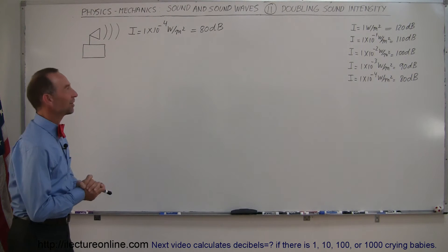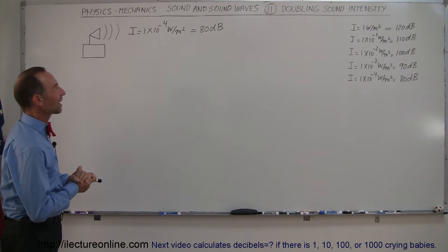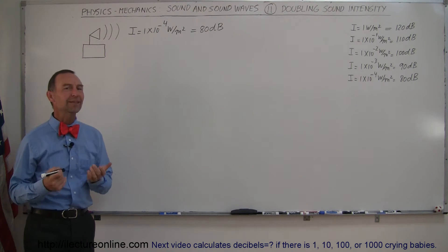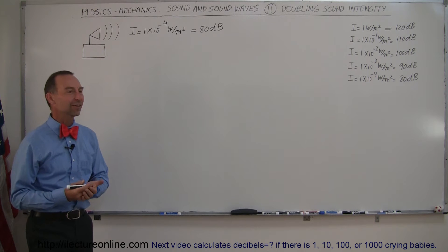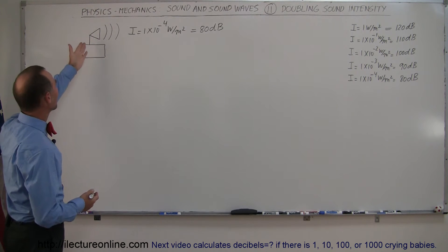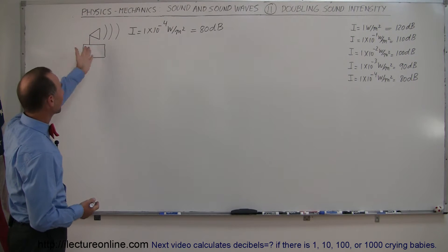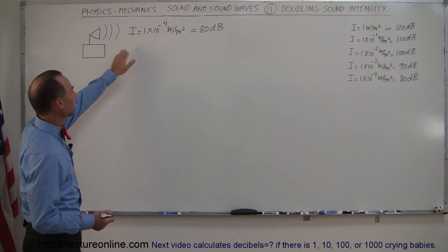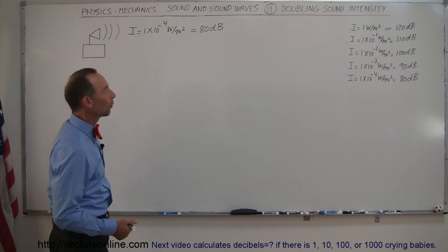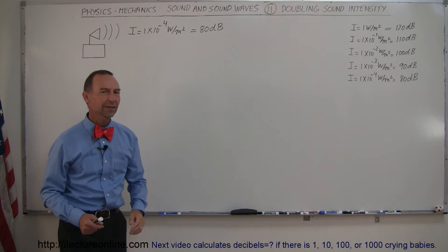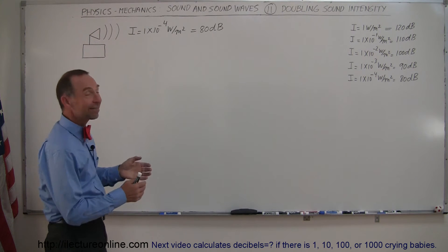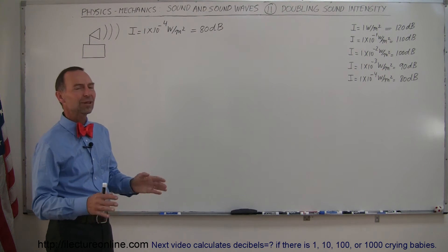Welcome to Electronline, and here our next video on sound is the concept of doubling the sound intensity. Let's say we have a loudspeaker putting out sound at an intensity of 1 times 10 to the minus 4 watts per square meter, and right away you should look at it and go, oh, that's 80 decibels.